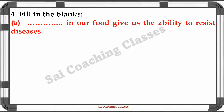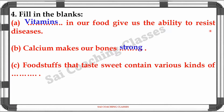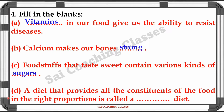Question 4. Fill in the blanks. A. The dot dot in our food gives us the ability to resist disease. Answer: Vitamins. B. Calcium makes our bones strong. C. Foodstuffs that taste sweet contain various kinds of sugars. D. A diet that provides all the constituents of the food in the right proportion is called the balanced diet.